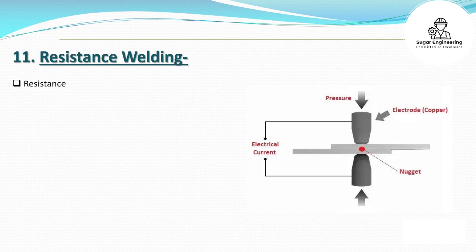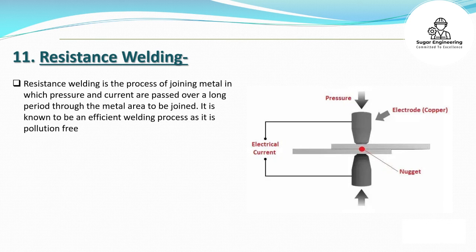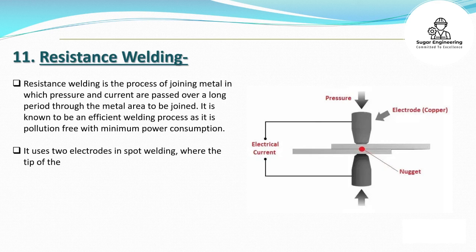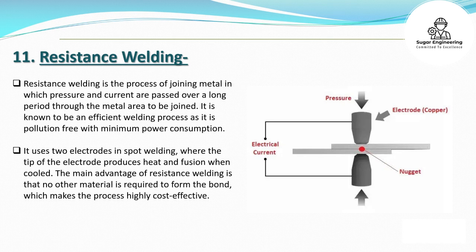11. Resistance Welding. Resistance welding is the process of joining metal in which pressure and current are passed over a period through the metal area to be joined. It is known to be an efficient welding process as it is pollution-free with minimum power consumption. It uses two electrodes in spot welding, where the tip of the electrode produces heat and fusion when cooled. The main advantage is that no other material is required to form the bond, making the process highly cost-effective.